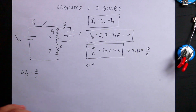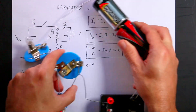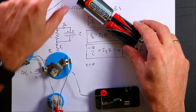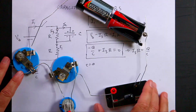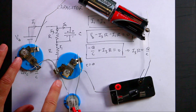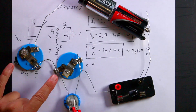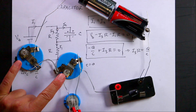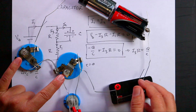Okay, let's actually do it. Here's my capacitor, my two light bulbs, my switch, and my battery. I'm going to close this and we're going to watch the brightness of these two. They're not super bright but I think we can tell. Ready, start.